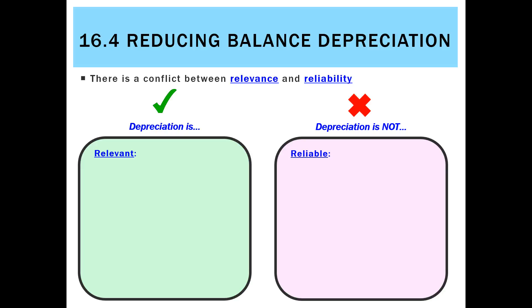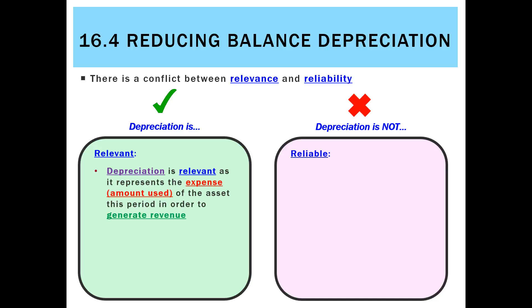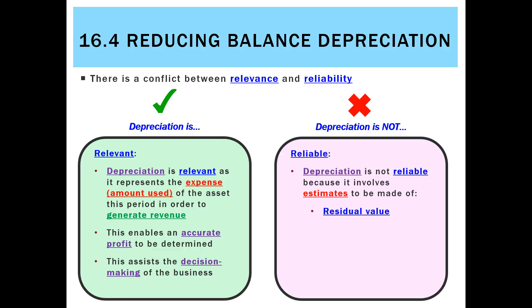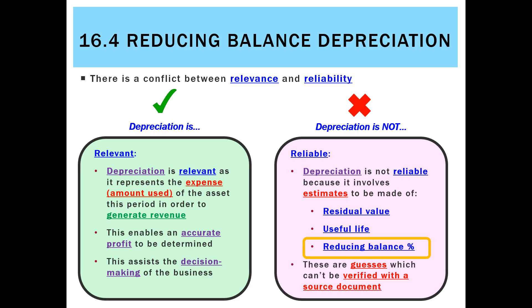There's a conflict we always know about with depreciation — relevance and reliability — and that's no different now that we're using reducing balance. Depreciation is relevant because it helps us determine the most accurate expense used to generate revenue this period, giving us an accurate profit for better decision-making. However, depreciation is not reliable because it involves estimates. With straight line we estimated residual value and useful life, but with reducing balance we made one key assumption: the 15% rate. There's no set guide for where that number comes from — it's someone's guess or estimate with no source document to back it up. So the same conflict between relevance and reliability exists with reducing balance depreciation as it did with straight line.